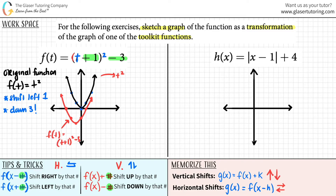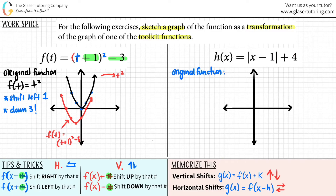Let's try the next one. The first thing is to get your original function. Strip away all of your big numbers and only focus on what's happening to x. Bye-bye negative one, bye-bye plus four — they go away. The only thing left is the absolute value of x. So the original function here would be h of x equals the absolute value of x.